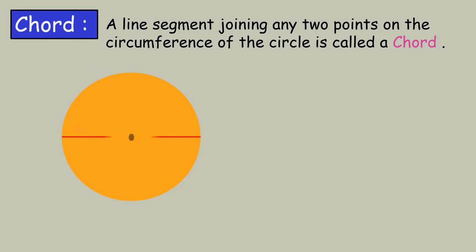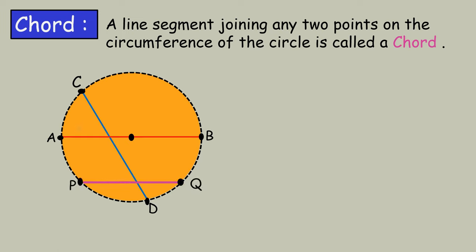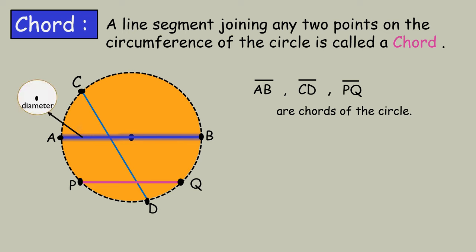Chord. A line segment joining any two points on the circumference of the circle is called a chord. Here, line segments AB, CD, and PQ are chords of the circle. The chord AB is the longest chord, and it is also the diameter of the circle.